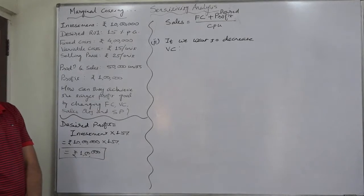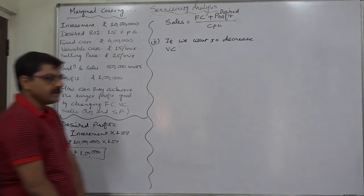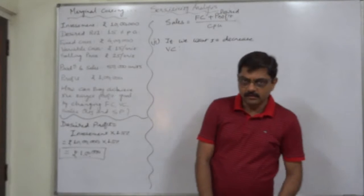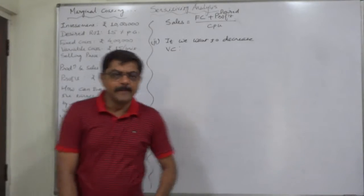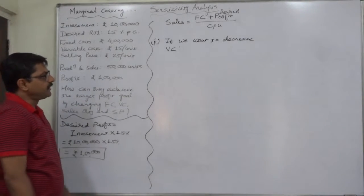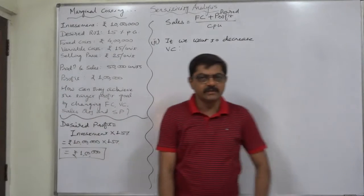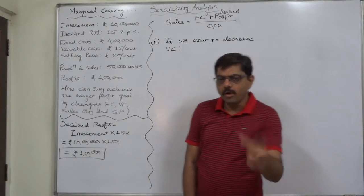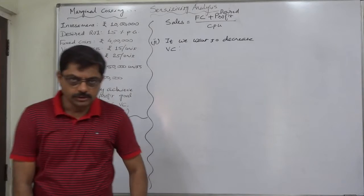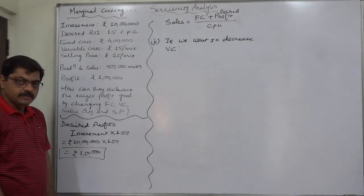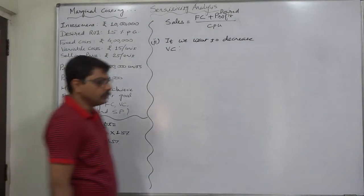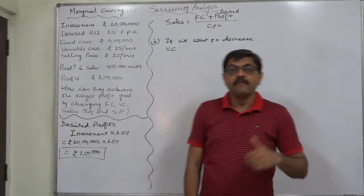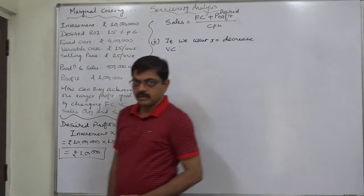How can they reduce the variable cost? That's another thing, or that is the matter of management. But if they want to decrease the variable cost, by what amount per unit should we decrease the variable cost? For this purpose, first of all we have to find out the revised variable cost, and then by comparing the revised variable cost with the existing one, we can say by what amount or by what rate we should decrease the variable cost.